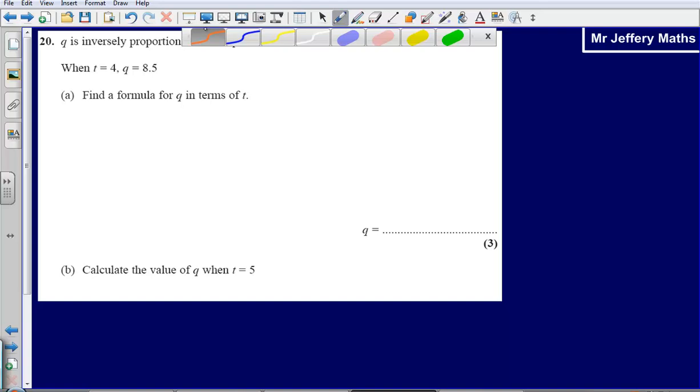So the first thing I need to do is say, well, q is inversely proportional to the square of t. So what I am going to say is that q is equal to k over t squared. So we know that they are inversely proportional but we don't know exactly how they are inversely proportional.